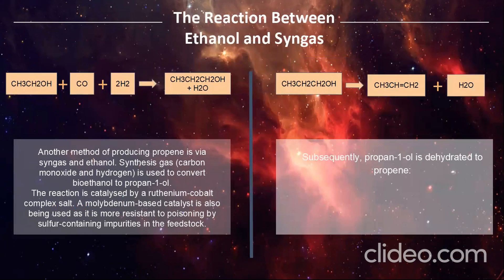The second reaction is the reaction between ethanol and syngas. Another method of producing propylene is via syngas and ethanol. Synthesis gas such as carbon monoxide and hydrogen is used to convert bioethanol to propan-1-ol. The reaction is catalysed by a ruthenium-cobalt complex salt. A molybdenum-based catalyst is also used as it is more resistant to poisoning by sulfur-containing impurities in the feedstock. Subsequently, propan-1-ol is dehydrated to propylene.